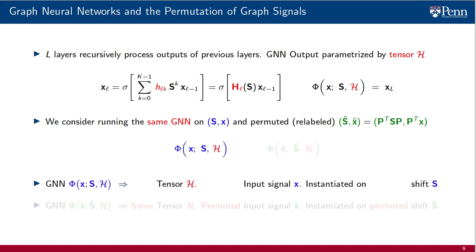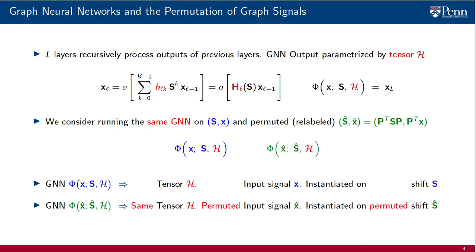To be clear, we want to understand the relationship between the output of the GNN operator phi that uses the filter tensor h, takes the signal x as an input, and instantiates the filters of each layer on the shift operator s; and the output of the GNN operator phi that uses the same filter tensor h, but takes as input the permuted signal x-hat, and instantiates the filters on the permuted shift operator s-hat.